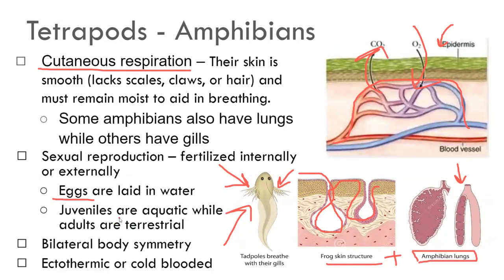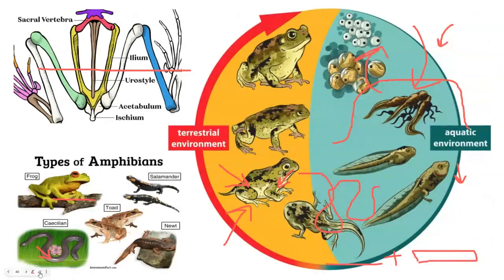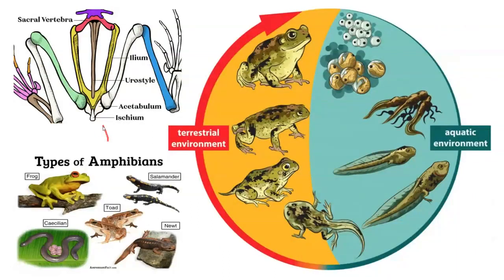Axolotls do not become terrestrial at all — they just stay in the water. They are ectothermic and rely on their environment for warmth. Here are some different types of amphibians. Here you can see the frog skeleton — the vertebrae are pretty short, but they have this elongated ilium, their hip bone. This allows them to be modified for jumping with strong jumping muscles. Here you can see their aquatic life cycle versus their terrestrial adult life cycle, with the intermediate tadpole-with-legs stage when it starts to come out of the water.